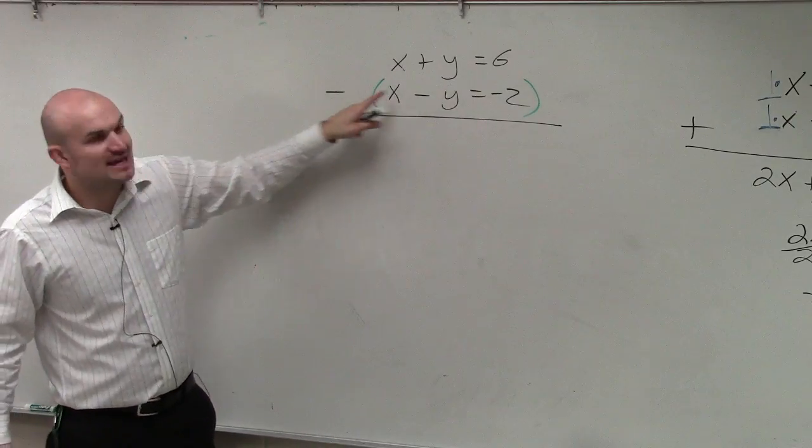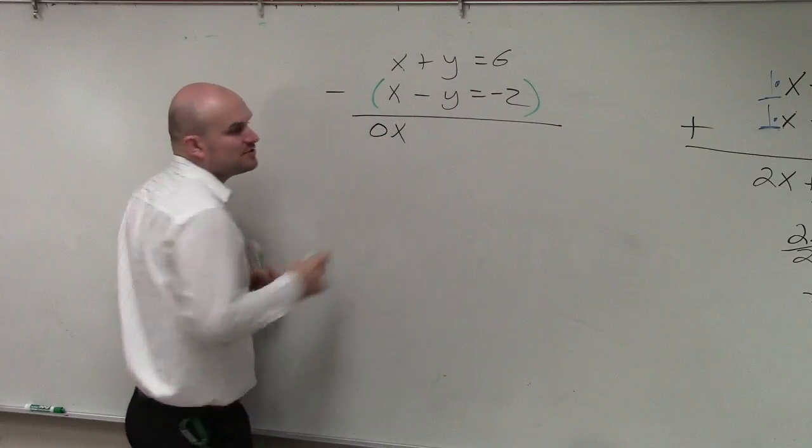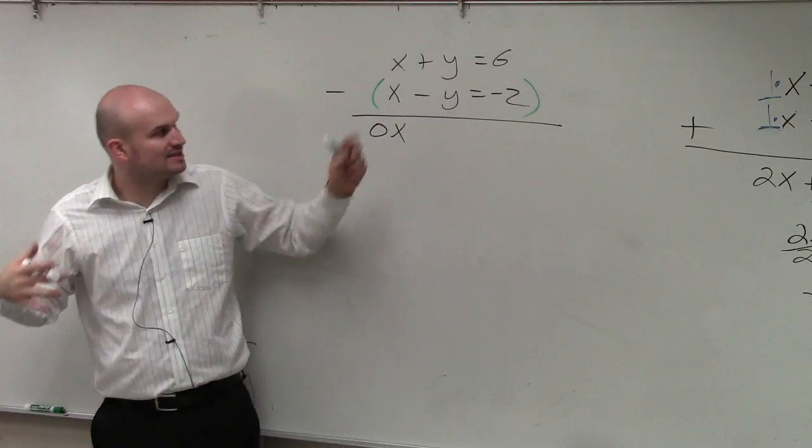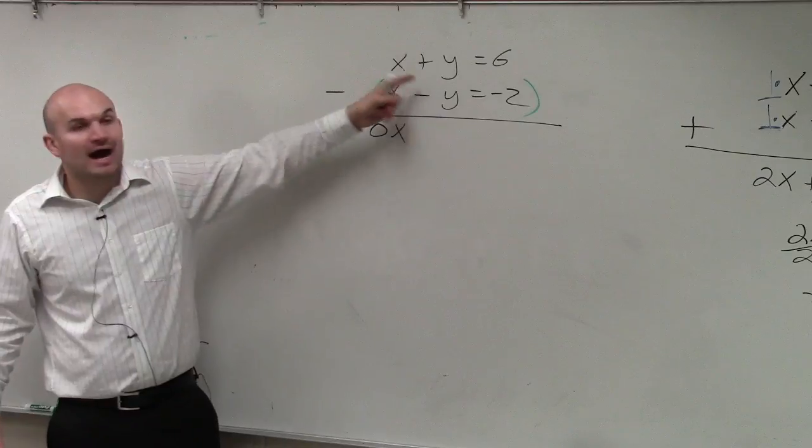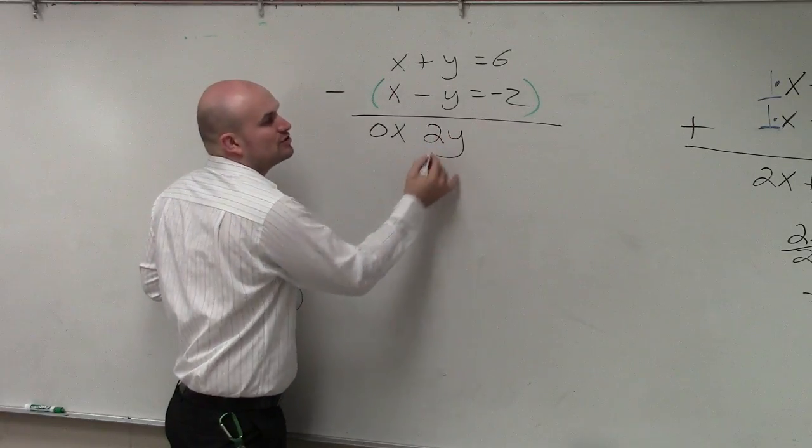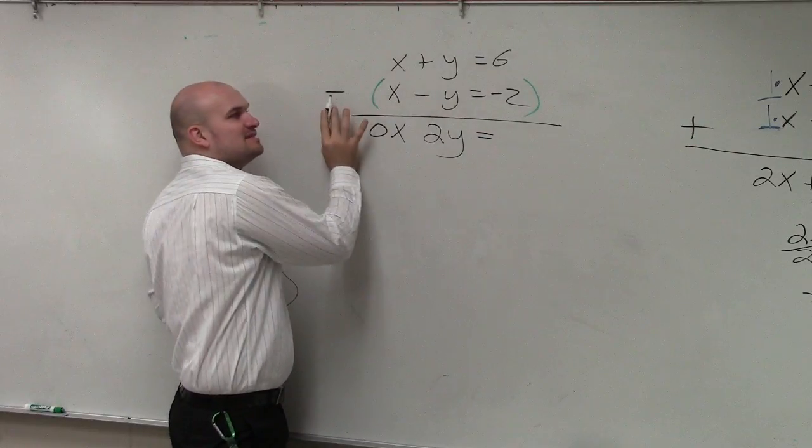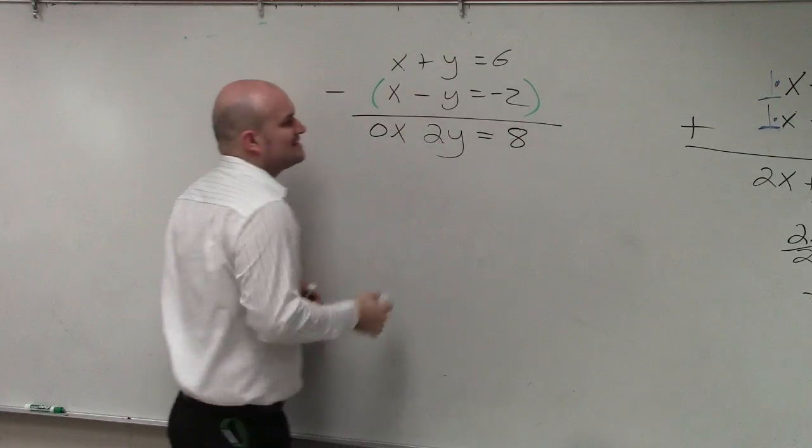So x minus x is, again, 0x. But here's where it gets confusing, which is the premise why you guys wanted to practice this. y minus a negative y. So y minus a negative y is a double negative, which gives you 2y, positive 2y. And then 6 minus a negative 2 equals positive 8.